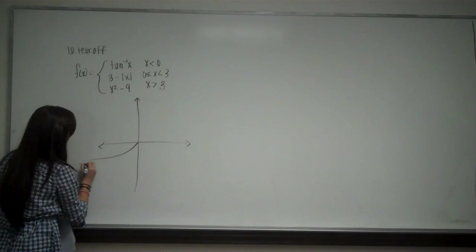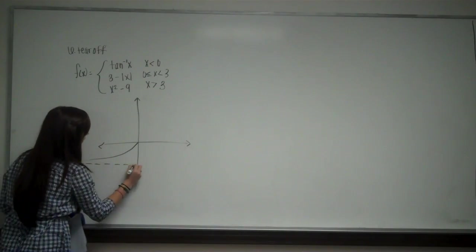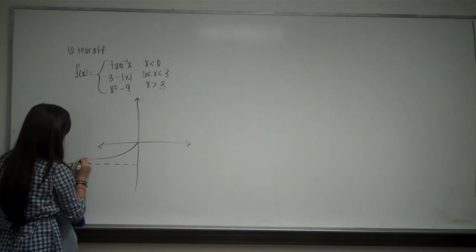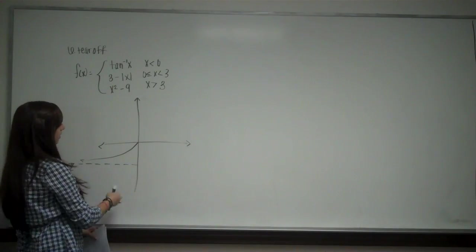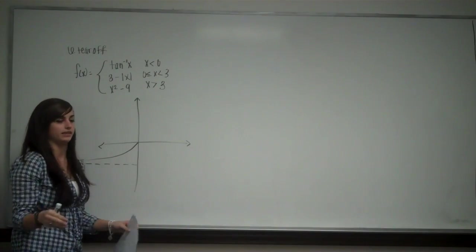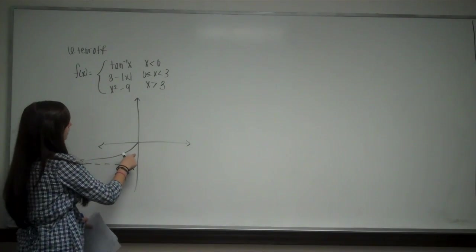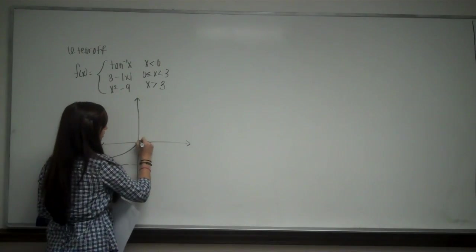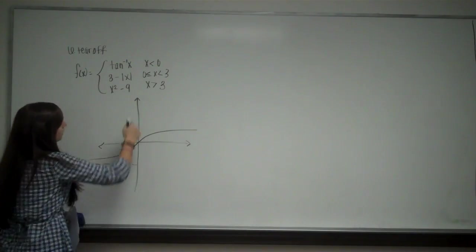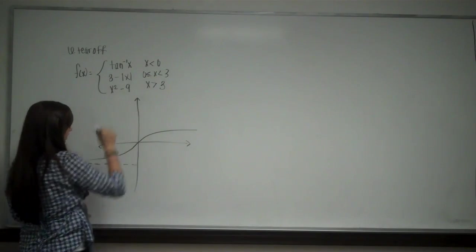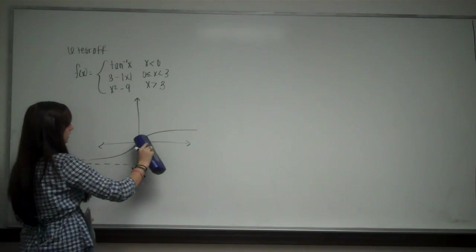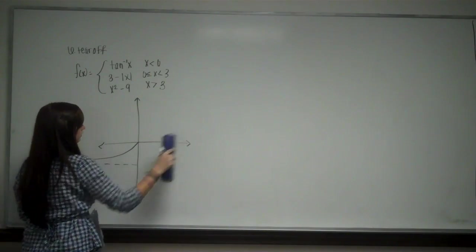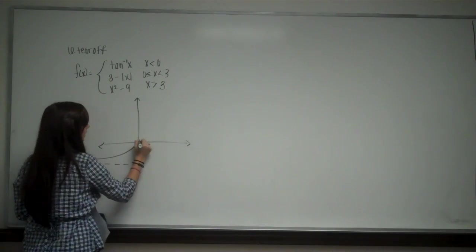And then it has a horizontal asymptote at pi over two. Just like regular tangent x has a vertical asymptote at pi over two. Now notice I stopped it at zero. Usually this graph would continue on. But it says that x has to be less than zero. We have to look at our constraints. So I don't use that part.